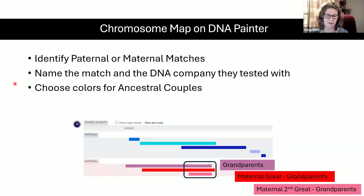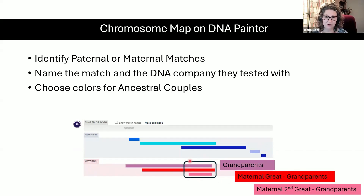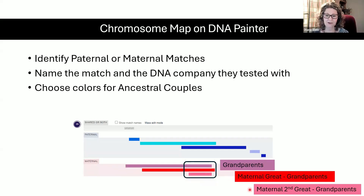When you paint a match, you can give the name of the match and the DNA company they tested with, then choose the color for the ancestral couple. Here you can see chromosome 16 with the two pairs — paternal and maternal. I've color-coded them: red-pink for maternal and blues and greens for paternal. Here is a triangulated segment I drew a box around. This purple segment is a first cousin sharing grandparents, the red goes back to maternal great-grandparents, and the pink goes further to maternal second great-grandparents.